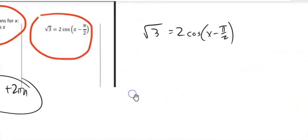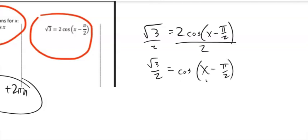So divide by 2. So now I've got root 3 over 2 is cosine x minus pi over 2. So this x minus pi over 2, these are the values that if I cosine them, they'll give me root 3 over 2.